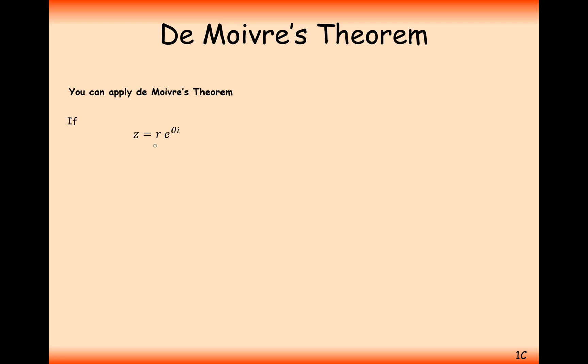If we have z equals r e to the theta i, then if we apply some rules of indices and raise this to the power n on both sides, we have z to the n equals r e to the theta i to the power of n. With the rules of indices, r will be to the power of n, and when you've got a power of a power, you multiply the powers together, so it's e to the n theta i. We have raised the modulus to the power of n and we've multiplied the angle by that power as well.